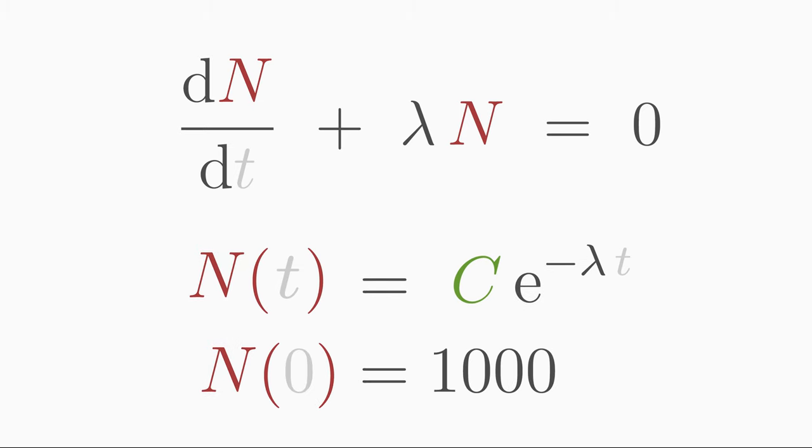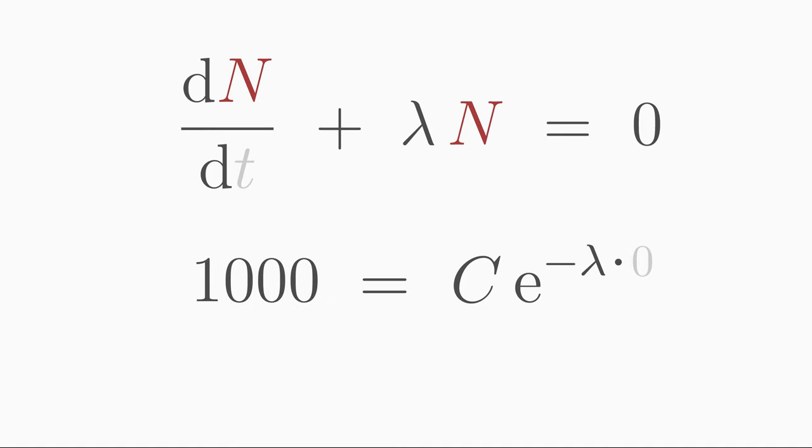That means, at the time t equals 0, there were 1000 atomic nuclei. Inserting this initial condition results in this equation. e to the power of 0 is 1, so c must be 1000.